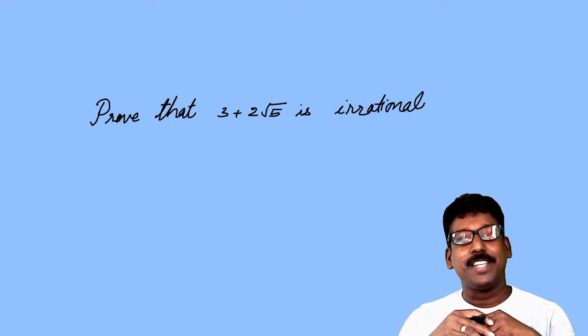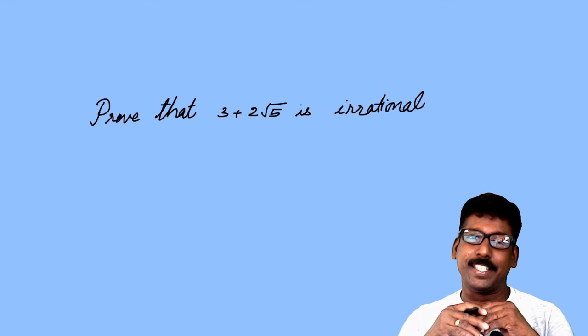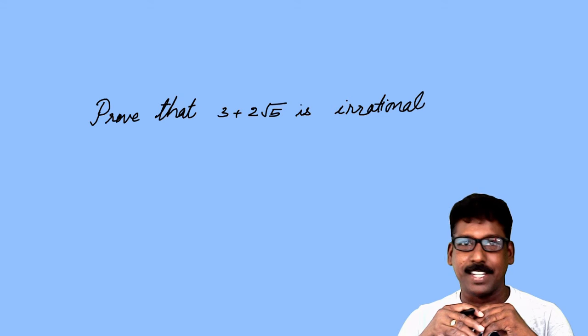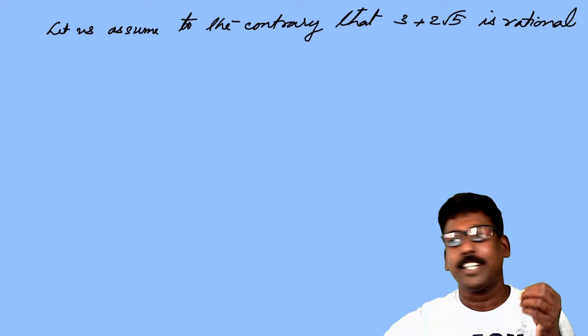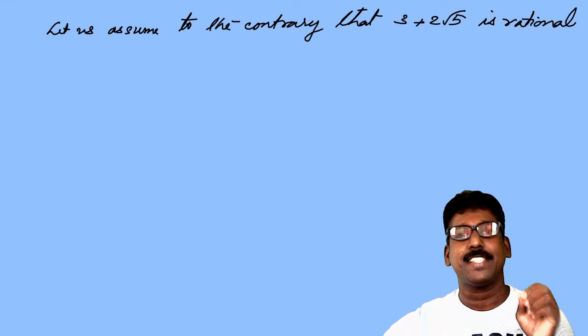Write the question: prove that 3 plus 2 root 5 is irrational. As in the case of root 2, here also we assume 3 plus 2 root 5 is irrational. So that step we can write as: let us assume to the contrary that 3 plus 2 root 5 is rational.